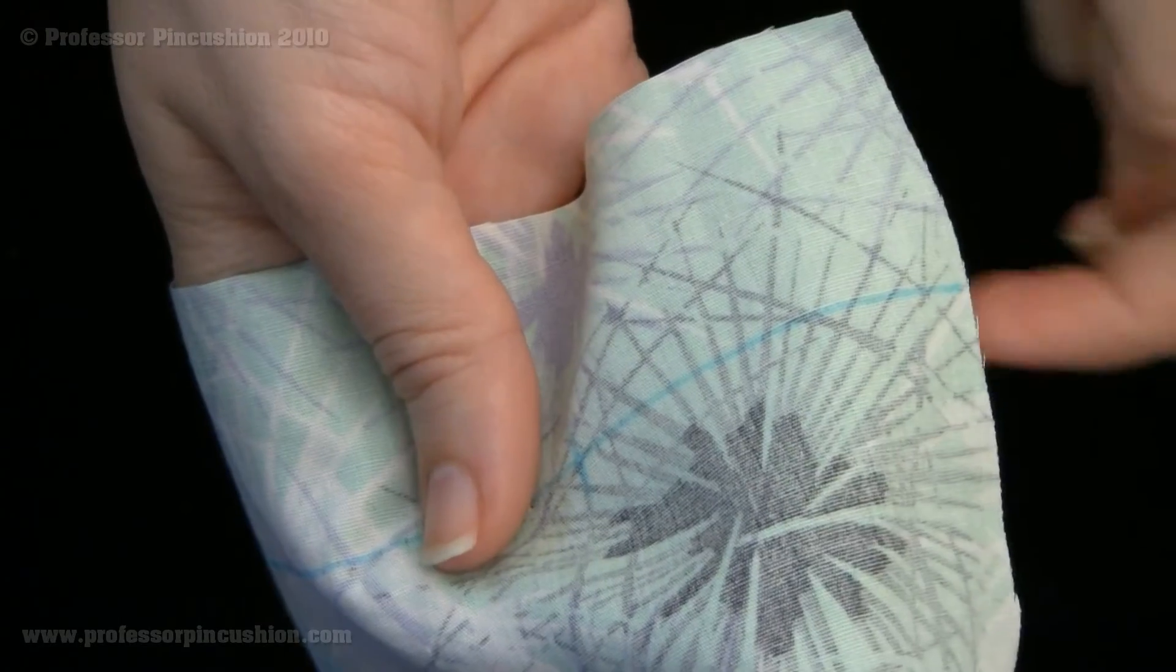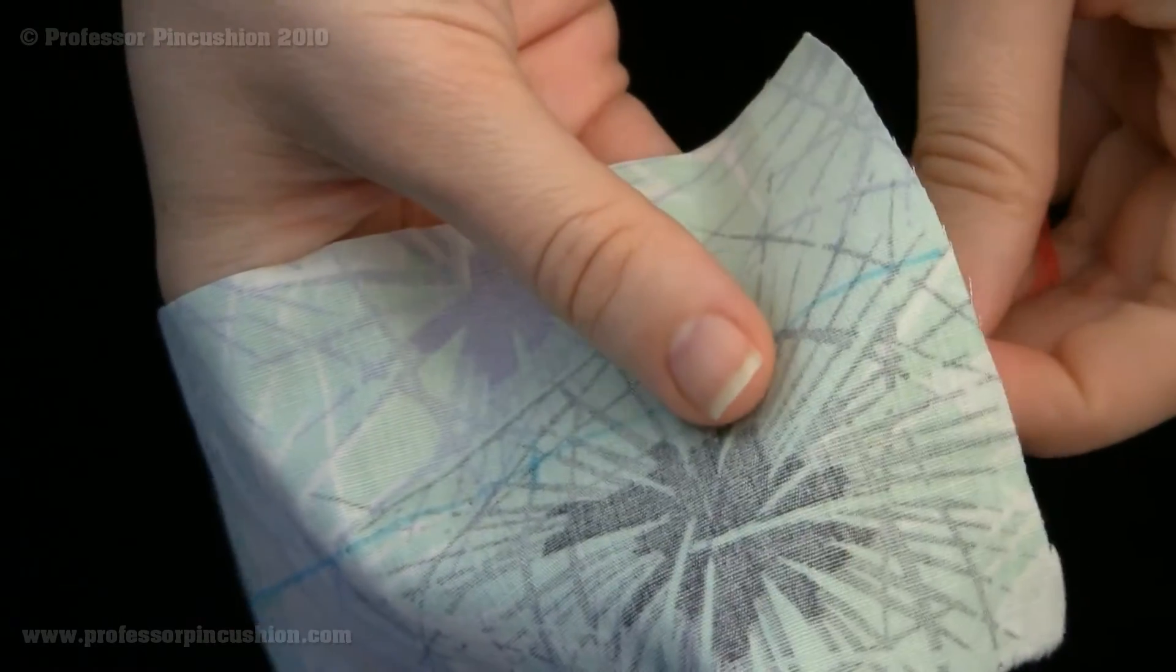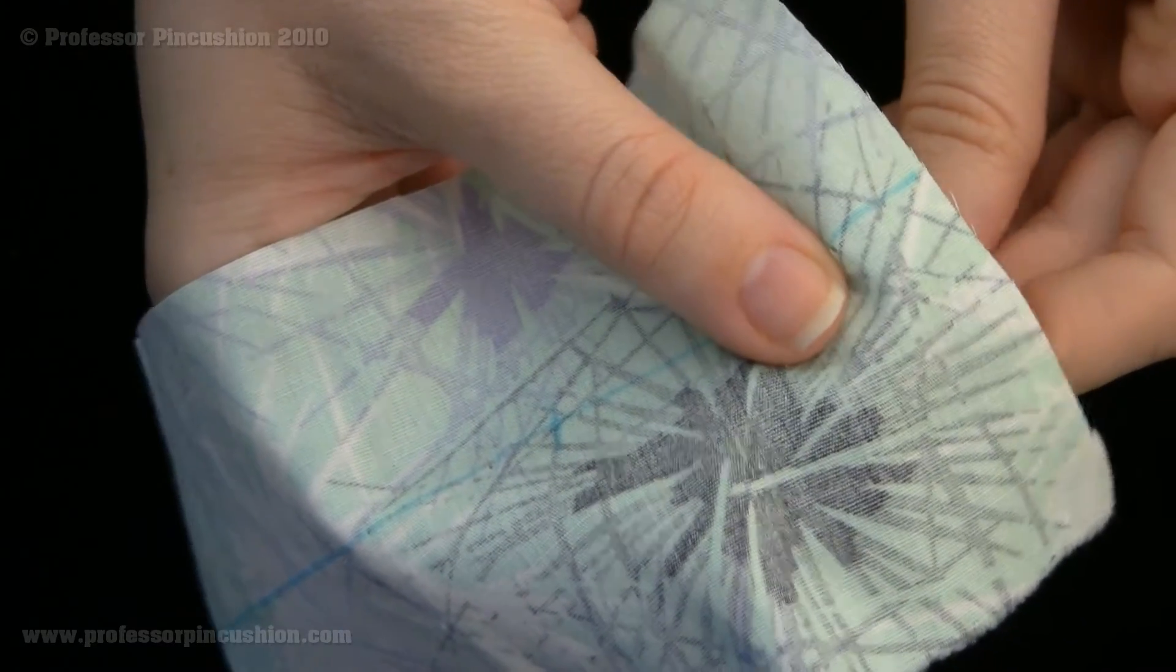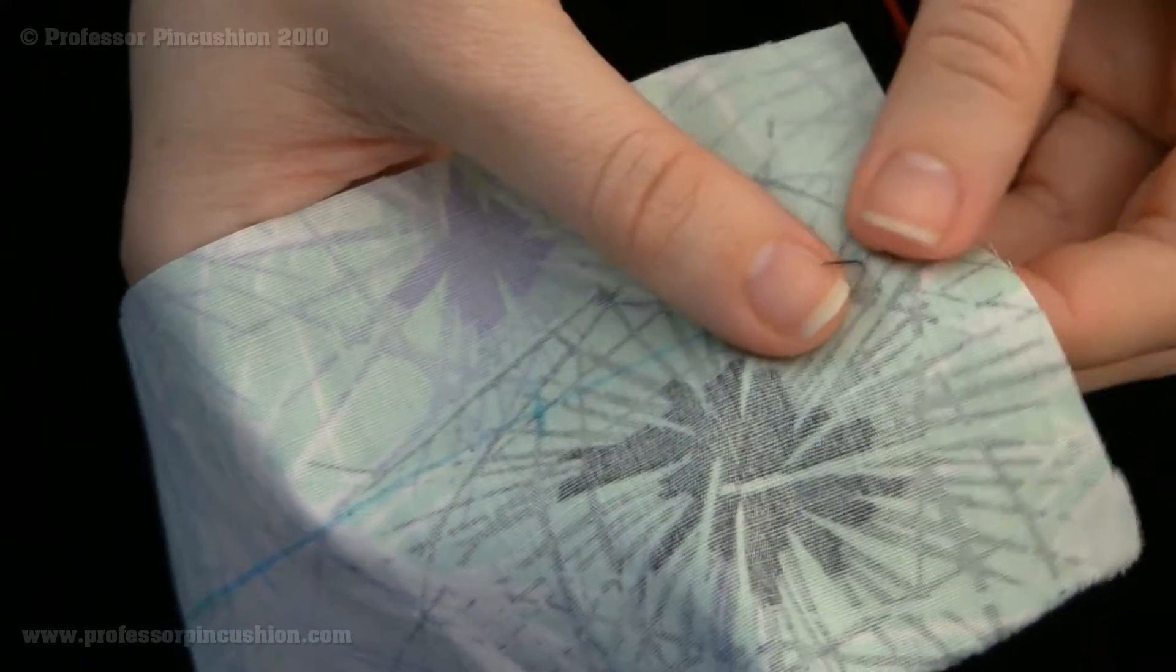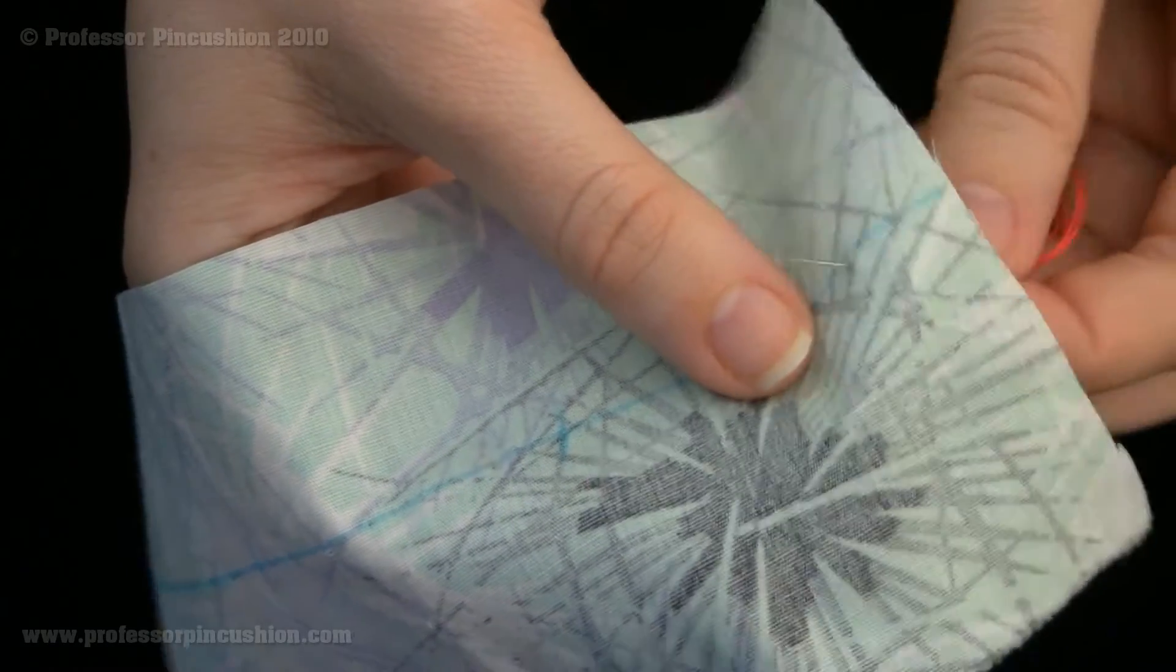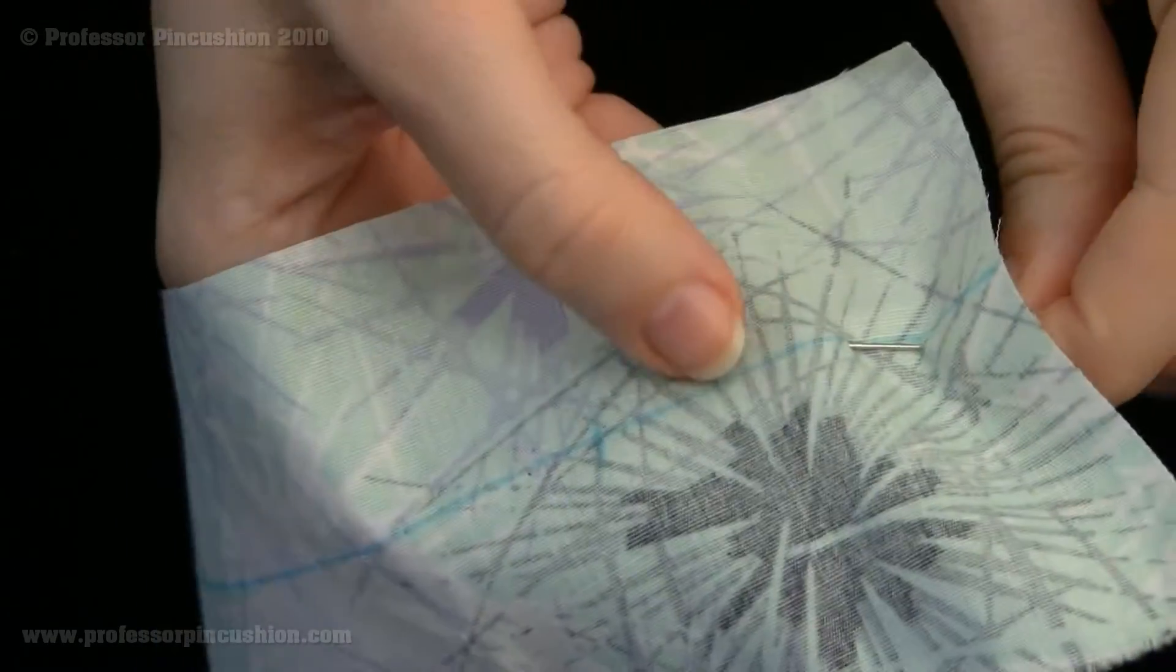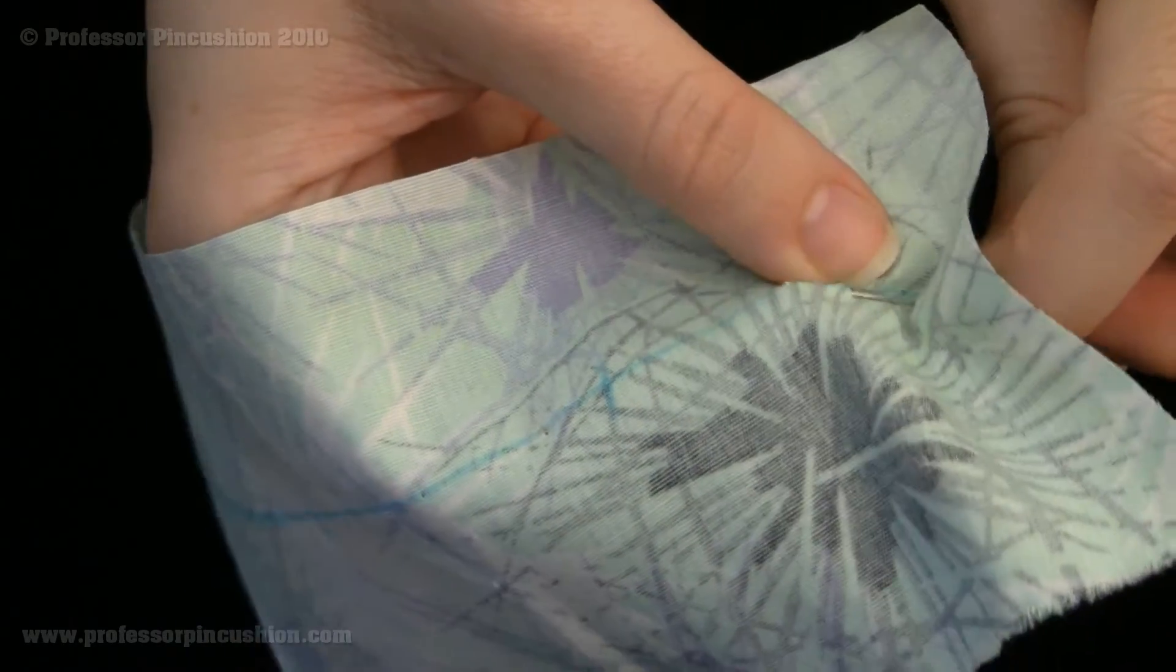For this other method we're going to start off the same way. I'm going to bring my needle up through my fabric but I'm not going to bring my needle all the way through. What I'm going to do is bring up just a little bit and go back down, pull it a little bit, and then come back up with my needle and then go down.